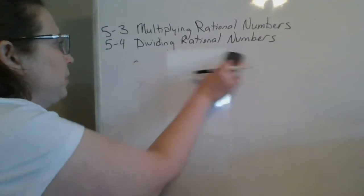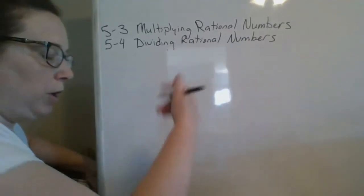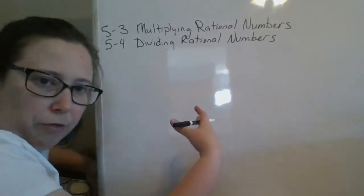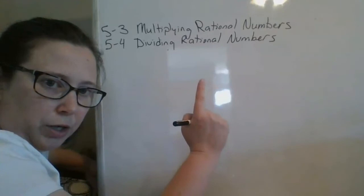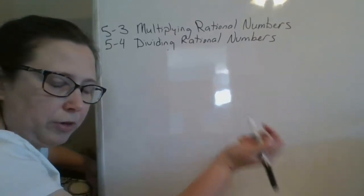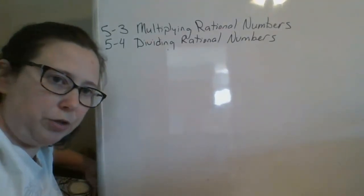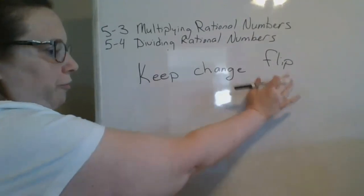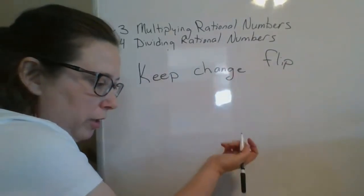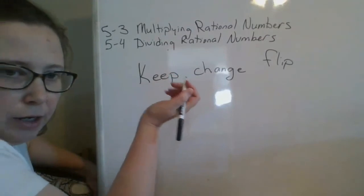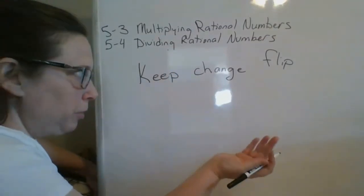Now we're going to jump into 5-4. Section 5-4 involves everything that 5-3 involved with one additional trick. When you are given division with fractions, this is what you need to remember: keep, change, flip. First, we're just finding multiplicative inverses or reciprocals — that is your flip part.